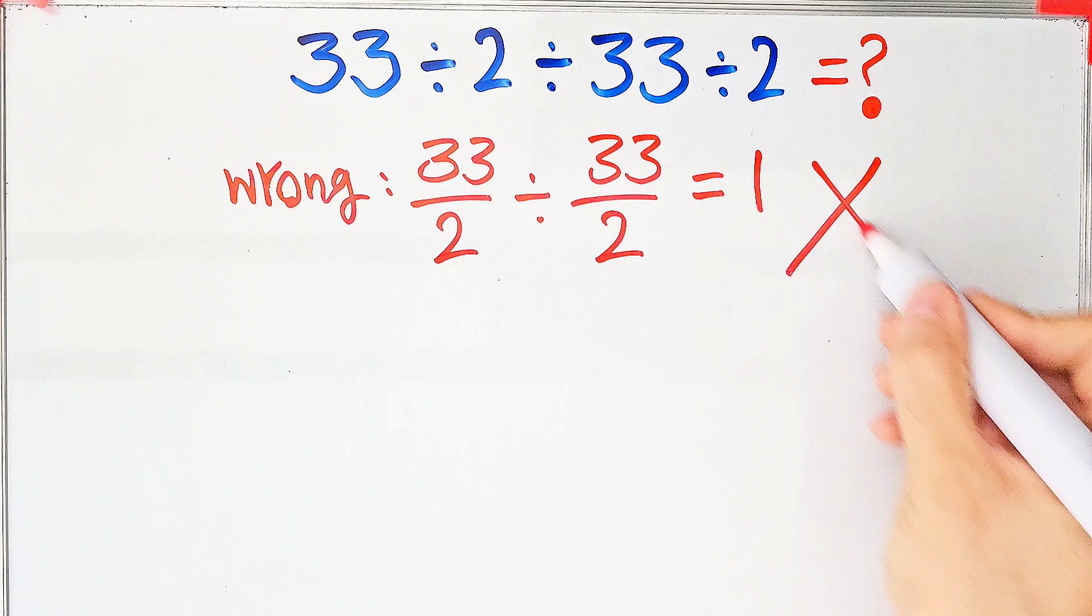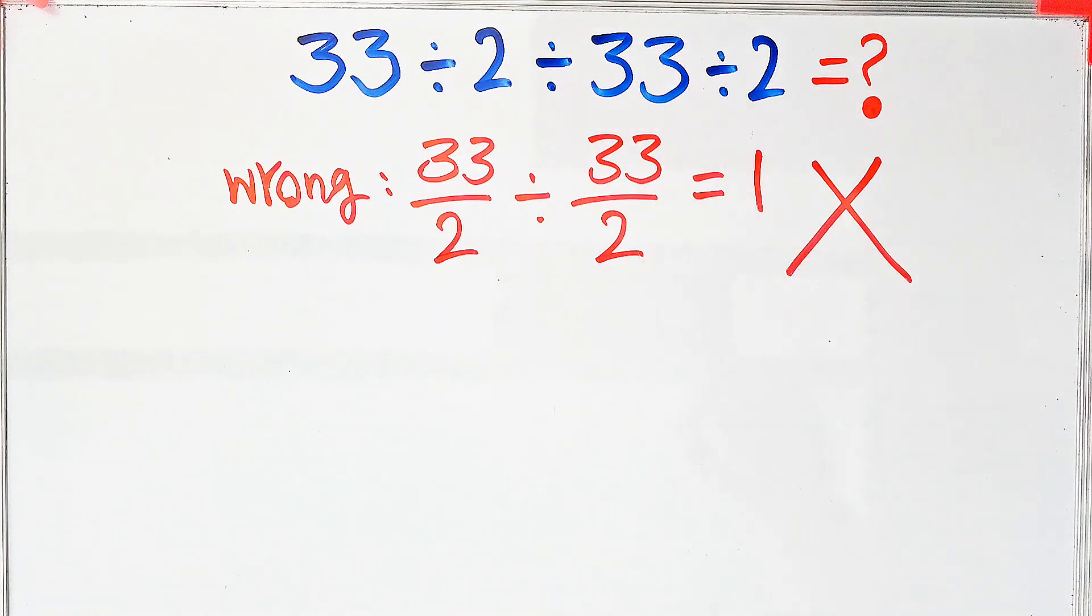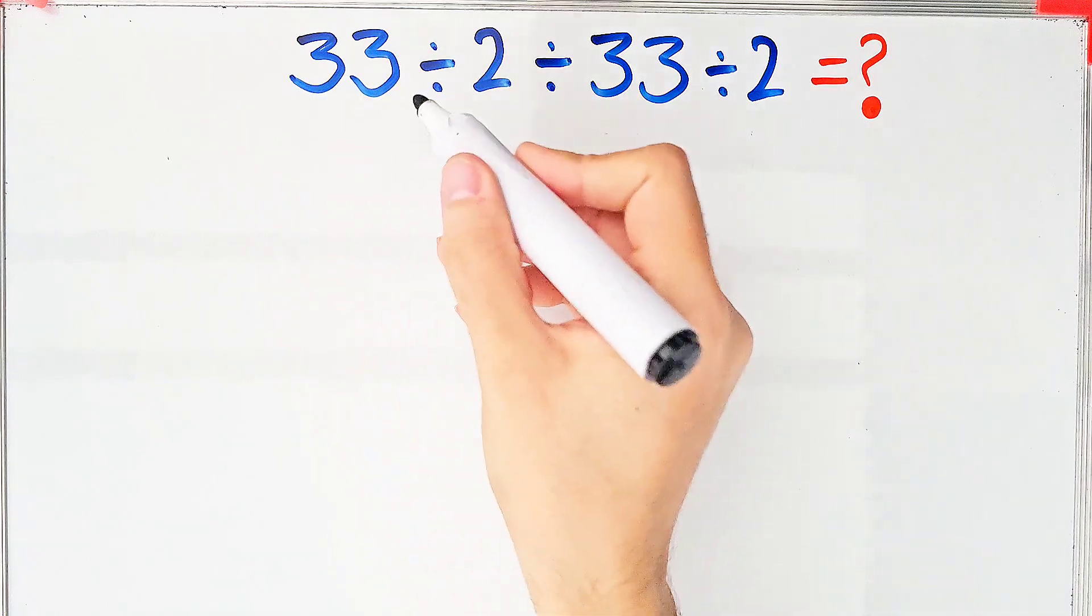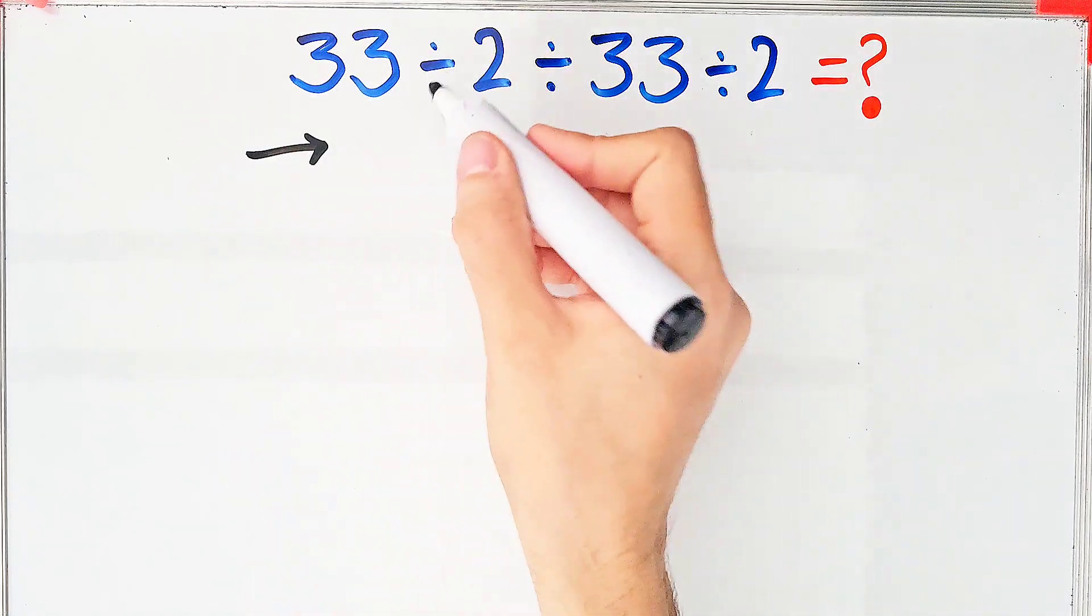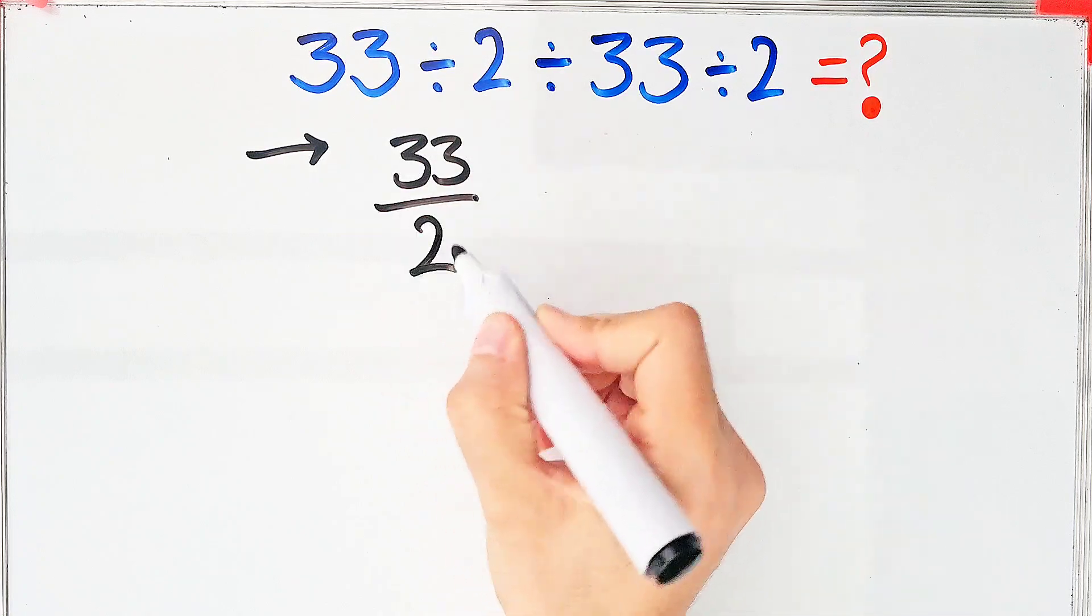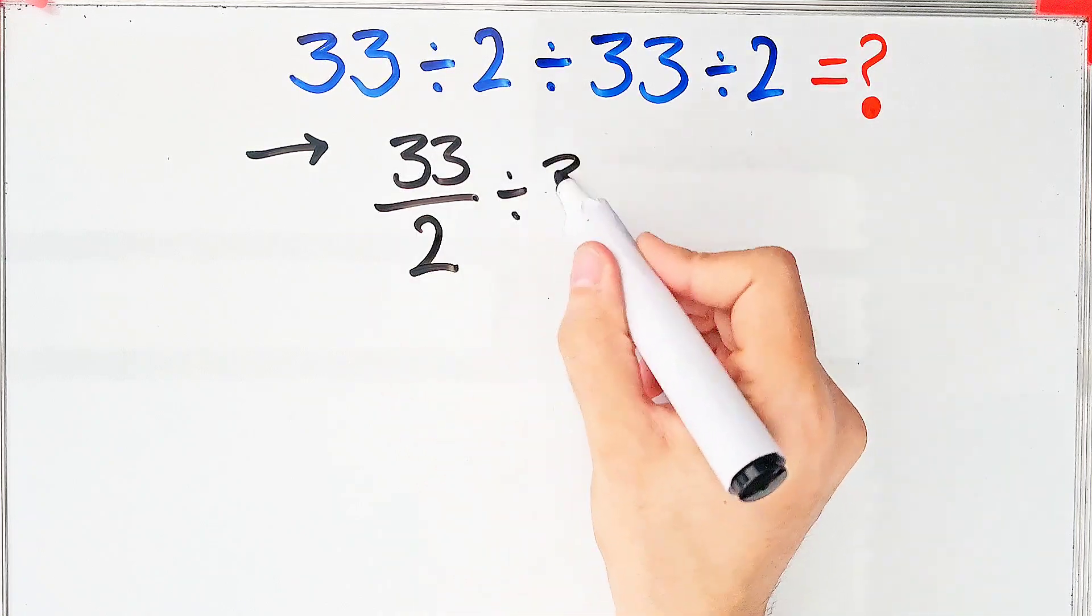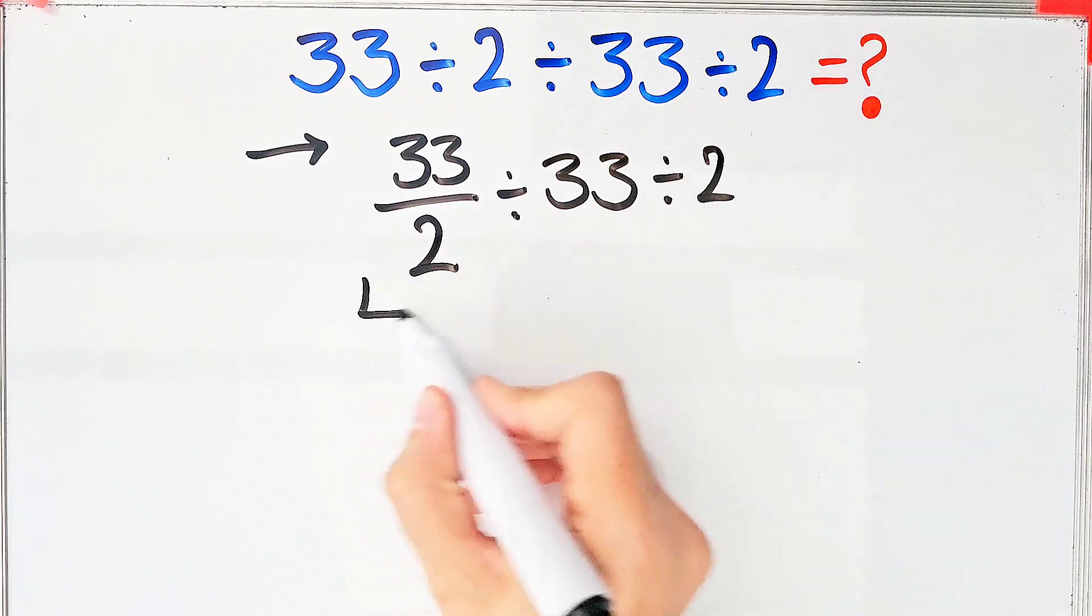Let's solve this question step by step together. Because we have 3 divisions, we start from the left and simplify the question. 33 divided by 2 equals 33 over 2. Now we have 33 over 2 divided by 33 then divided by 2. To solve the first part,